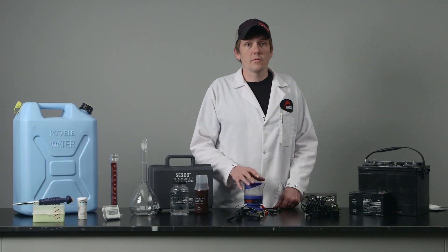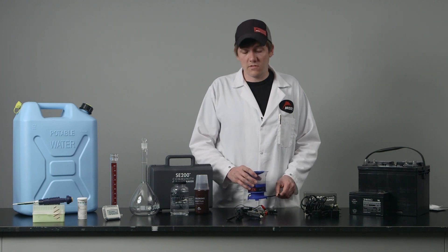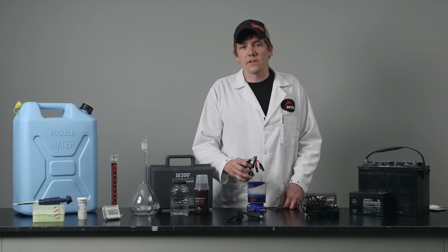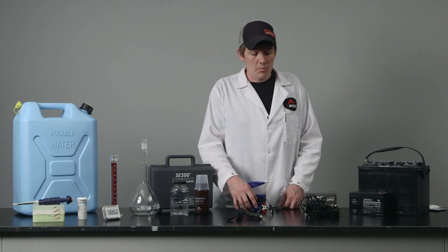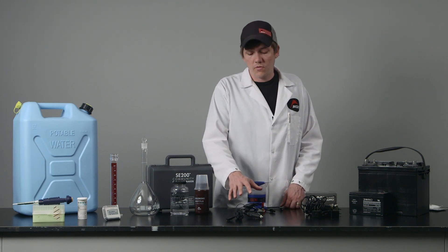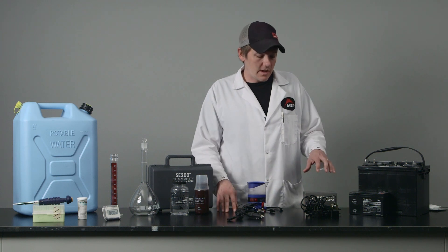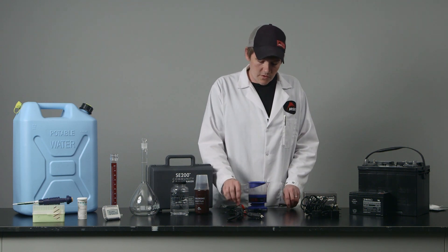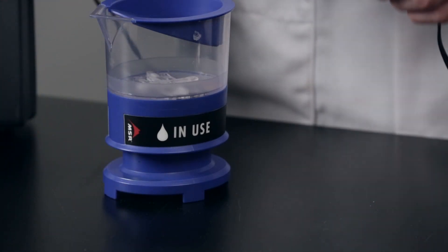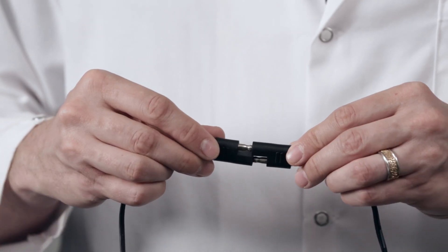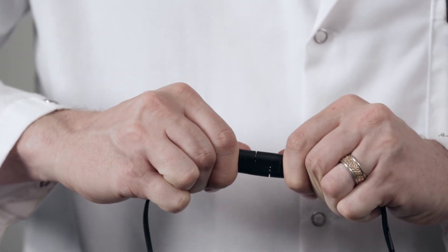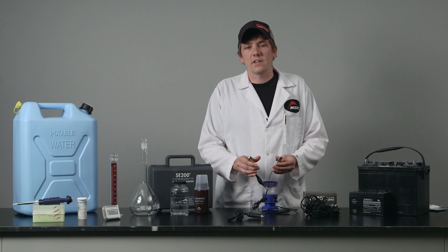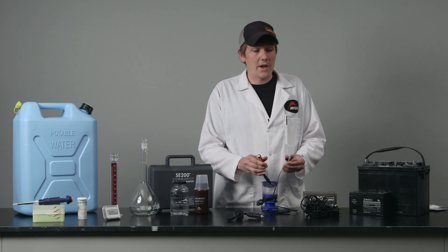The next thing you want to do when you're going to make chlorine is connect the system to power. The kit comes with alligator clips for adapting to a 12-volt battery, but there are also options available for a vehicle adapter and for a wall outlet adapter. The first thing you do is connect your adapter to the device.